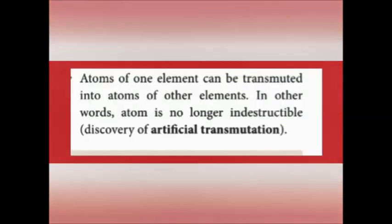What is termed as artificial transmutation? Atoms of one element can be transmuted into atoms of another element — this is called artificial transmutation. In nuclear reactions, the unstable nucleus undergoes disintegration and is converted into a stable nucleus. That process is also called artificial transmutation.